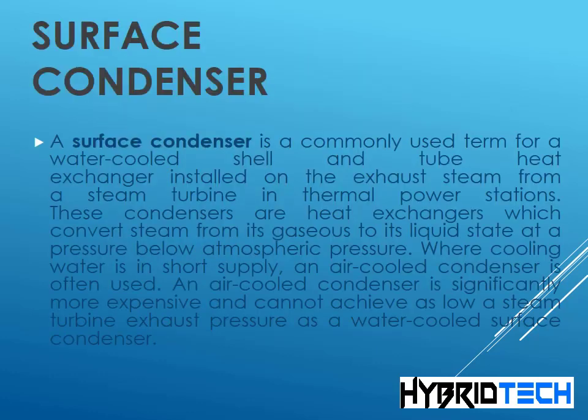Surface condenser: a surface condenser is a commonly used term for a water-cooled shell and tube heat exchanger installed on the exhaust steam from a steam turbine in thermal power stations. These condensers convert steam from its gaseous to its liquid state at a pressure below atmospheric pressure. Where cooling water is in short supply, an air-cooled condenser is often used, though it is significantly more expensive and cannot achieve as low a steam turbine exhaust pressure as a water-cooled surface condenser.